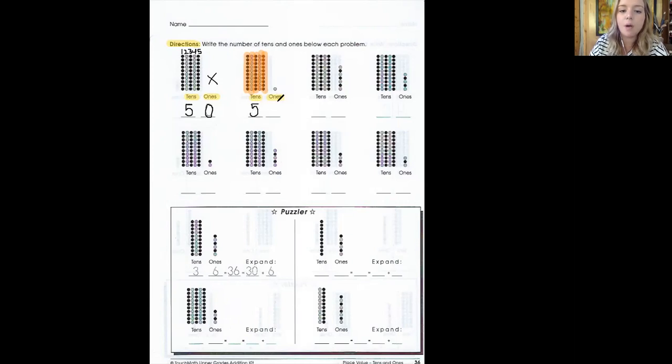Now we can look at the ones area. How many dots are in the ones area? There's just one dot. That means we have one one. So I'm going to write that here. We got 51 total because we have five tens and one one, which equals 51.